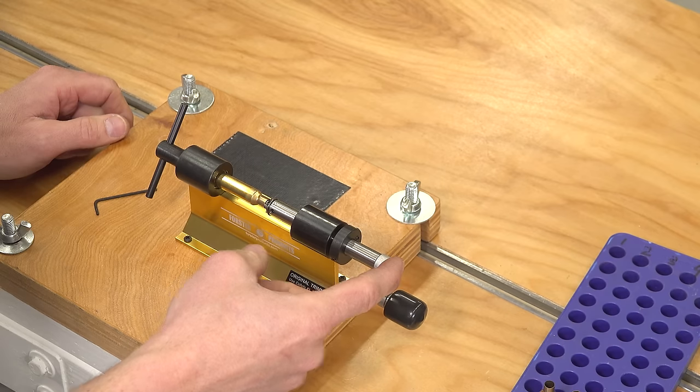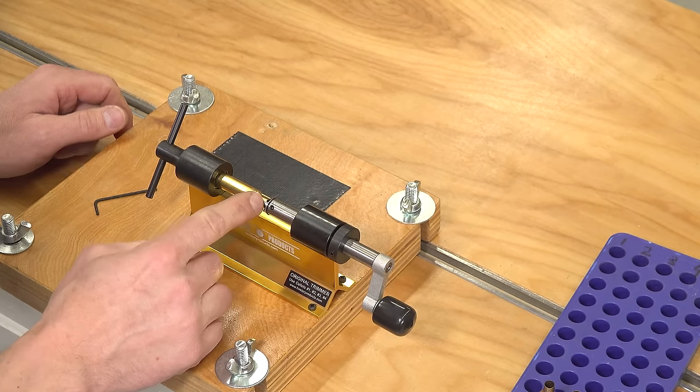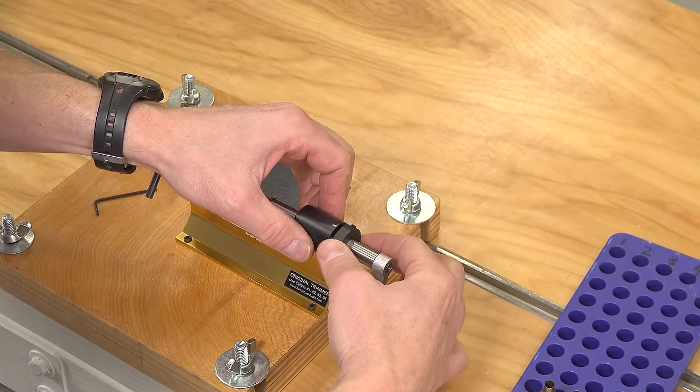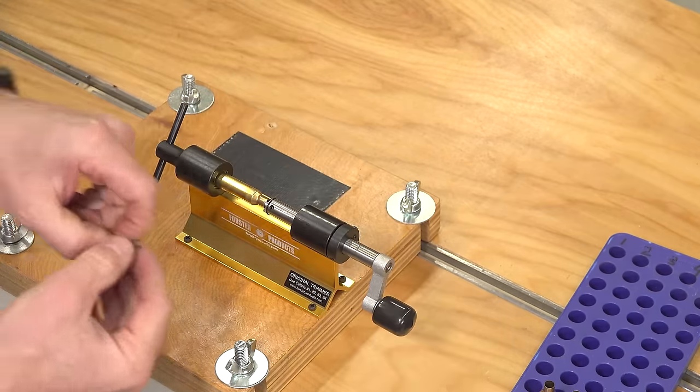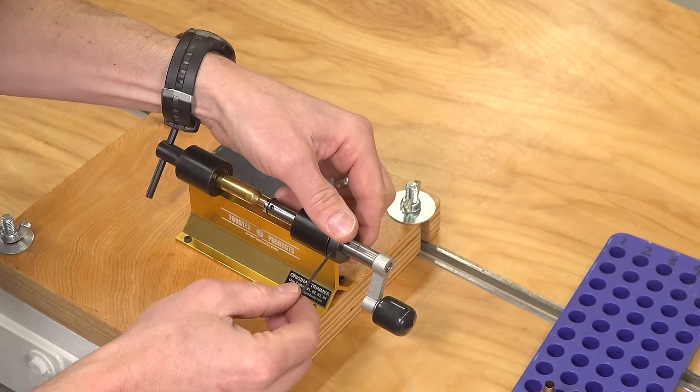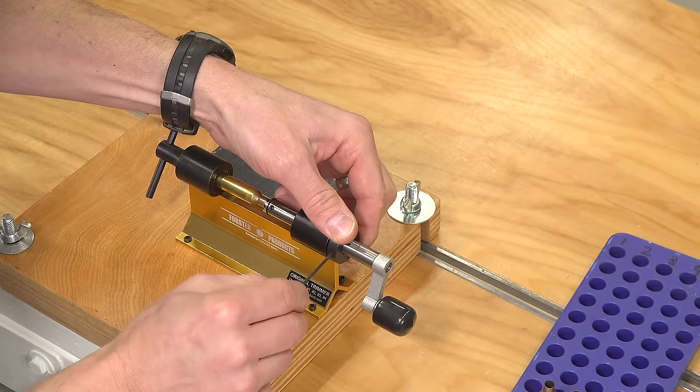Now we need to get the cutter basically touching the case mouth and then we're going to take this stop collar here and get it basically rough dialed in. I'm going to just push it against the bearing here which is stationary, tighten the set screw.